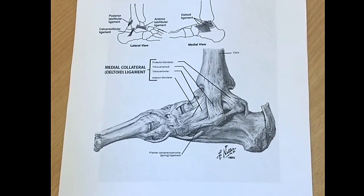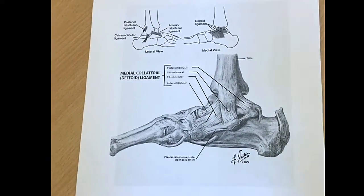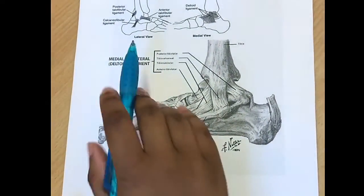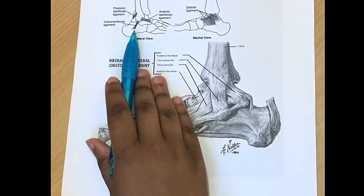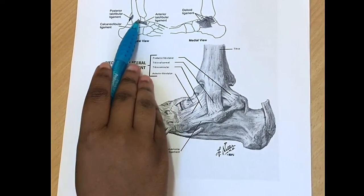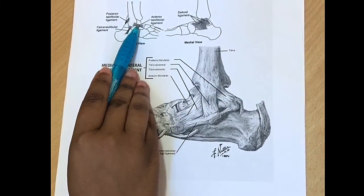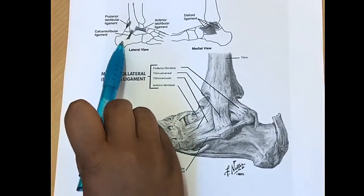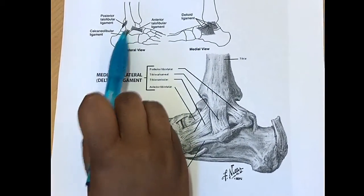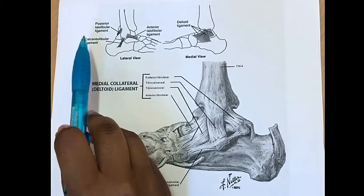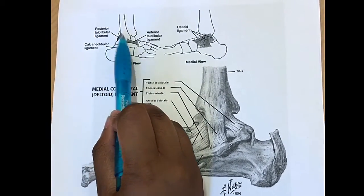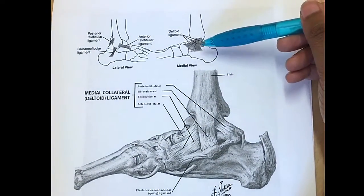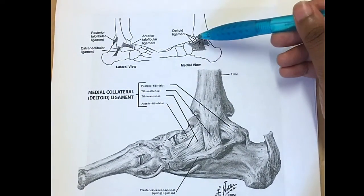With ligaments, there are four ligaments you have to think about on the lateral view. You can see there is the anterior talofibular ligament, then you have the calcaneofibular ligament, and then you have the posterior talofibular ligament. On the medial view you have what is called the medial collateral ligament, or the deltoid ligament.